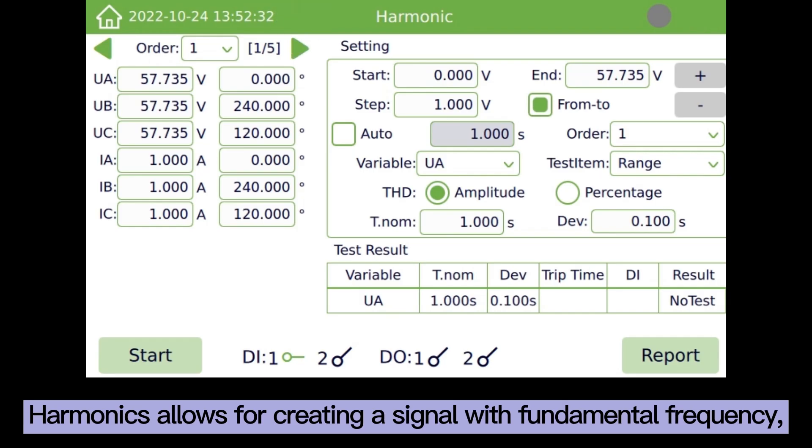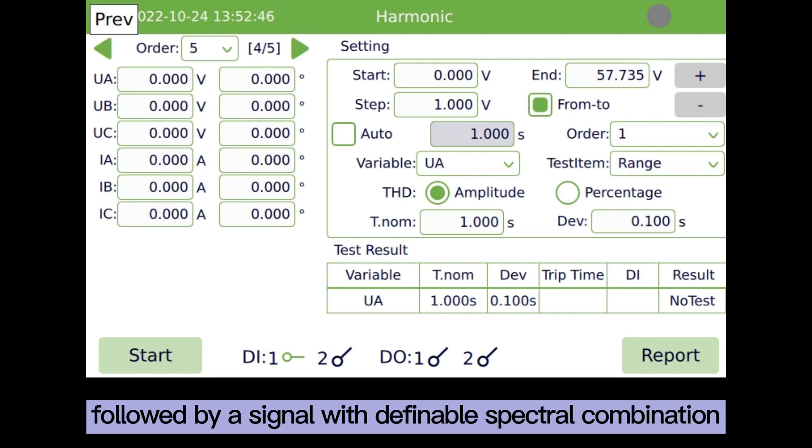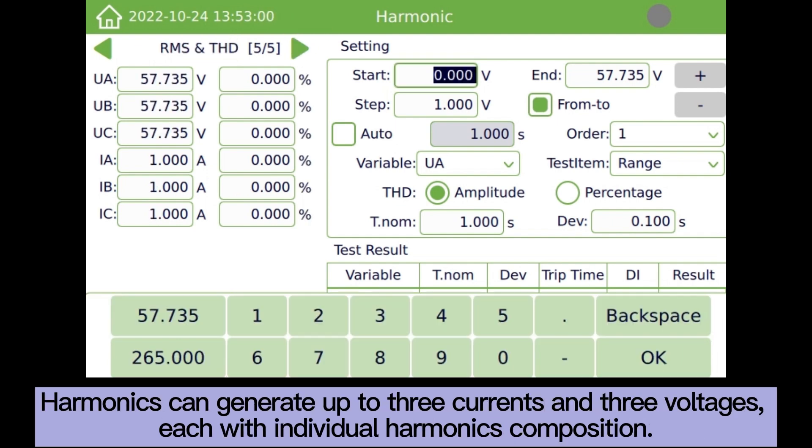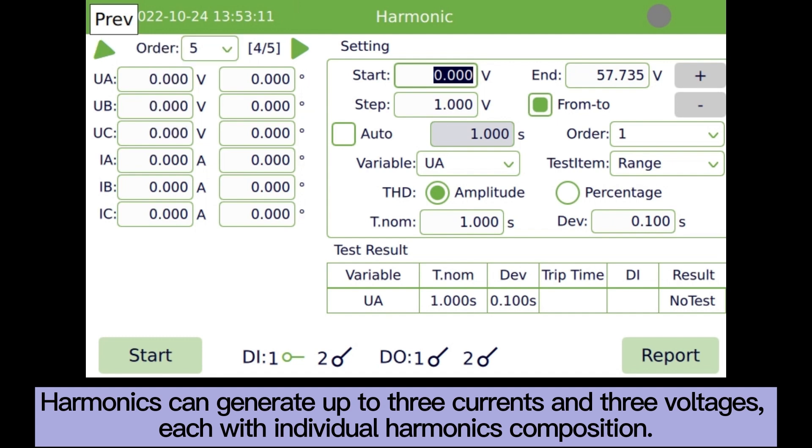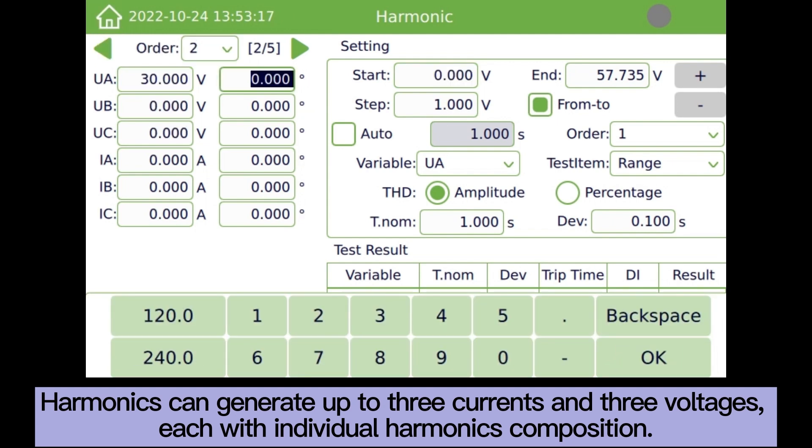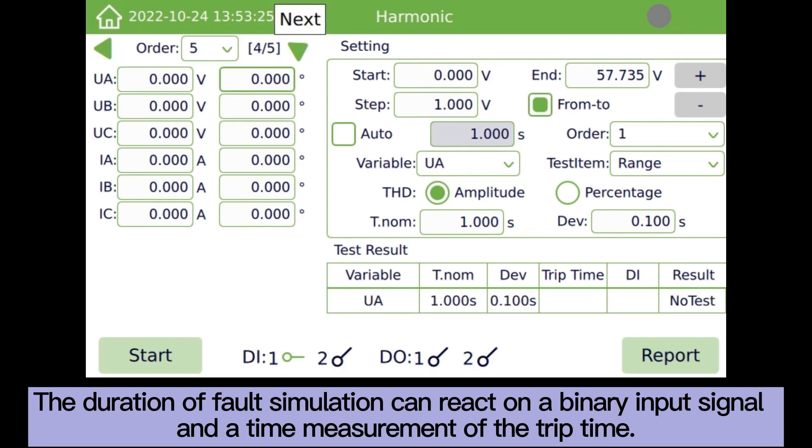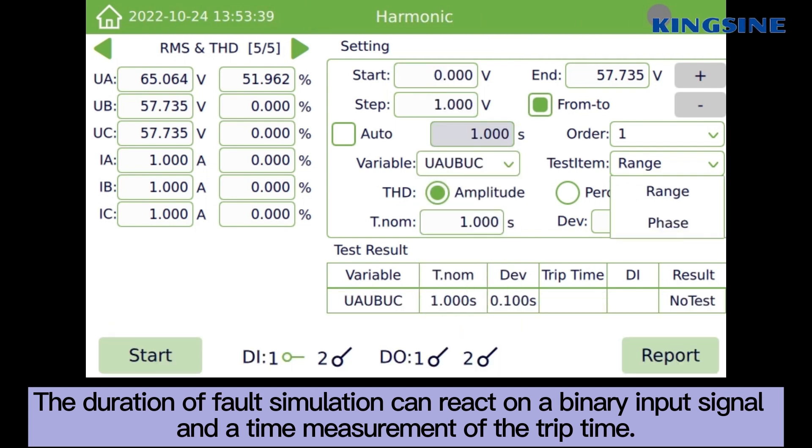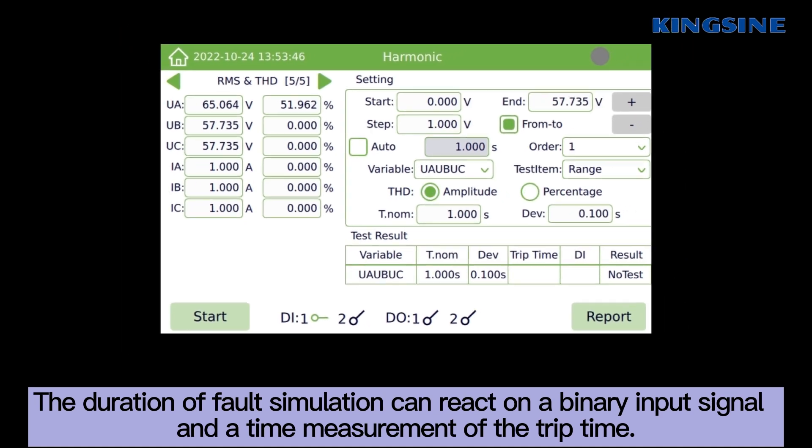Harmonics allows for creating a signal with fundamental frequency, followed by a signal with definable spectral combination. Harmonics can generate up to three currents and three voltages, each with the individual harmonics composition. The duration of fault simulation can react on a binary input signal, and a time measurement of the trip time.